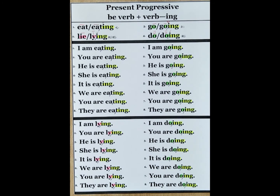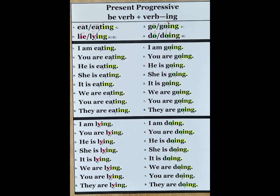Present progressive: be verb plus verb I-N-G. Let's review the spelling rules. Number one: for most verbs, we just add an I-N-G to the end. For example, eat — eating. I am eating. You are eating. He is eating. She is eating. It is eating. We are eating. You are eating. They are eating.